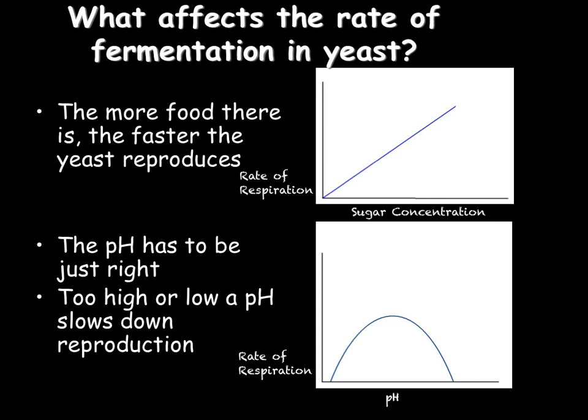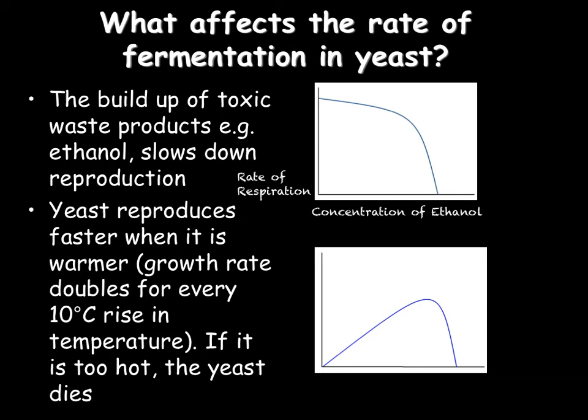This is because the yeast will become denatured by the high acidic or high alkali conditions. The ethanol that the yeast are producing via anaerobic respiration is also toxic to them. So as the concentration of this ethanol increases, the rate of respiration will go down and therefore the rate of fermentation will go down, as the yeast are gradually being killed off.